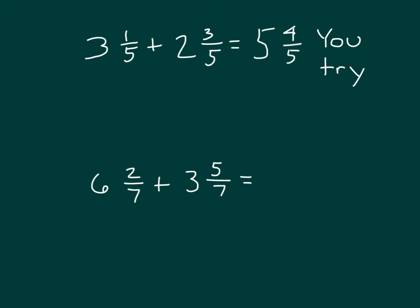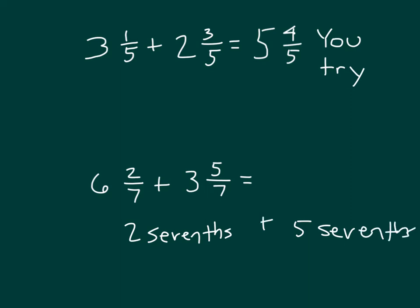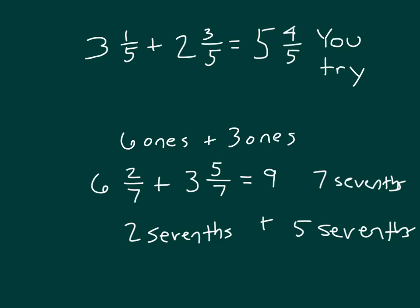For the other problem, we have two sevenths along with five sevenths. Written in unit form, we add two sevenths and five sevenths first to get seven sevenths. Then we add six ones along with three ones to get nine ones. Seven sevenths equals one, so nine ones and seven sevenths equals ten.